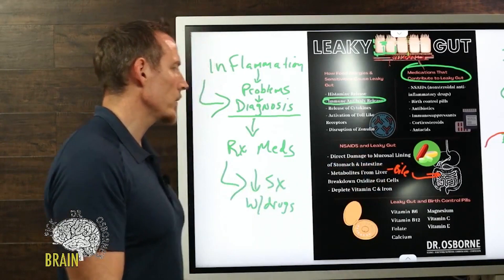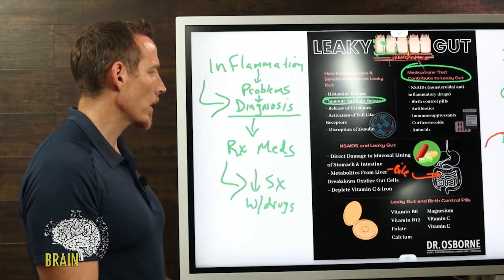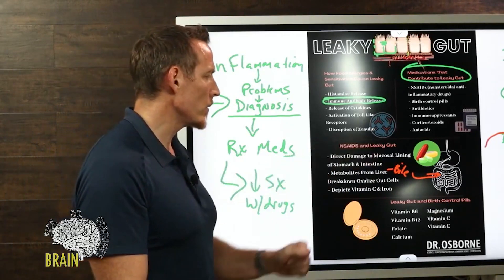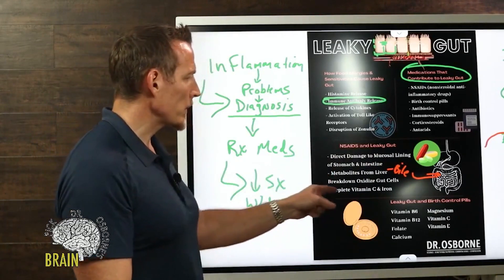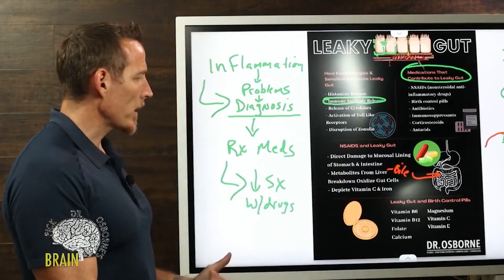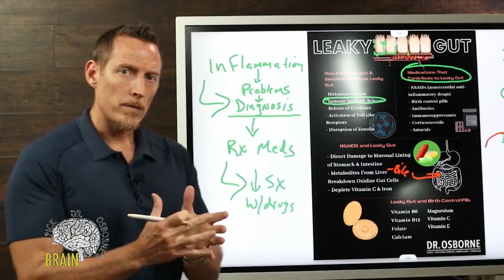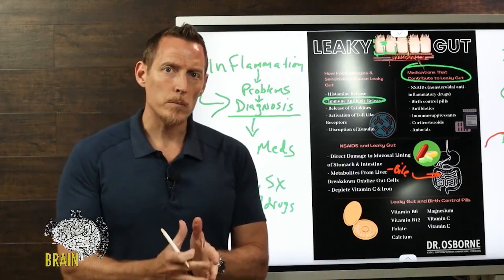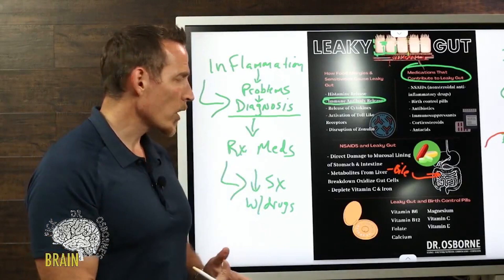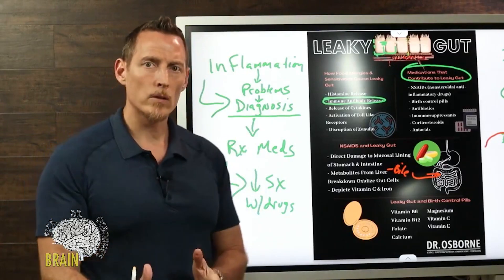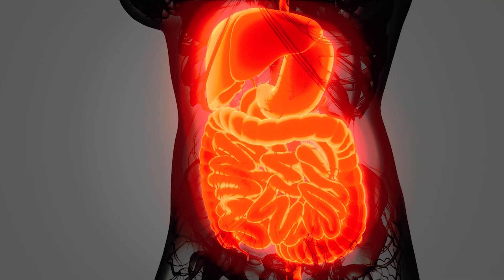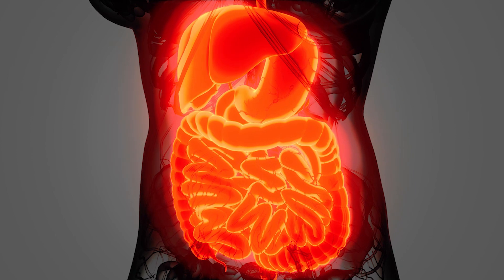The metabolites can actually oxidize gut cells, leading to the potential for leaky gut to occur. The other thing NSAIDs do is deplete vitamin C and iron. I've done a complete breakdown on iron — you can go back into my video library and watch my crash course on it.